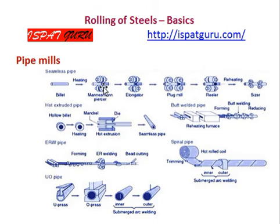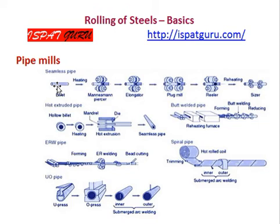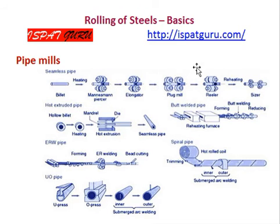This is a pipe mill for seamless pipe. The starting material is a round billet or cold billet. It then goes through a piercer, an elongator, a float mill, a reeler, and then a sizer, followed by a reheating furnace.